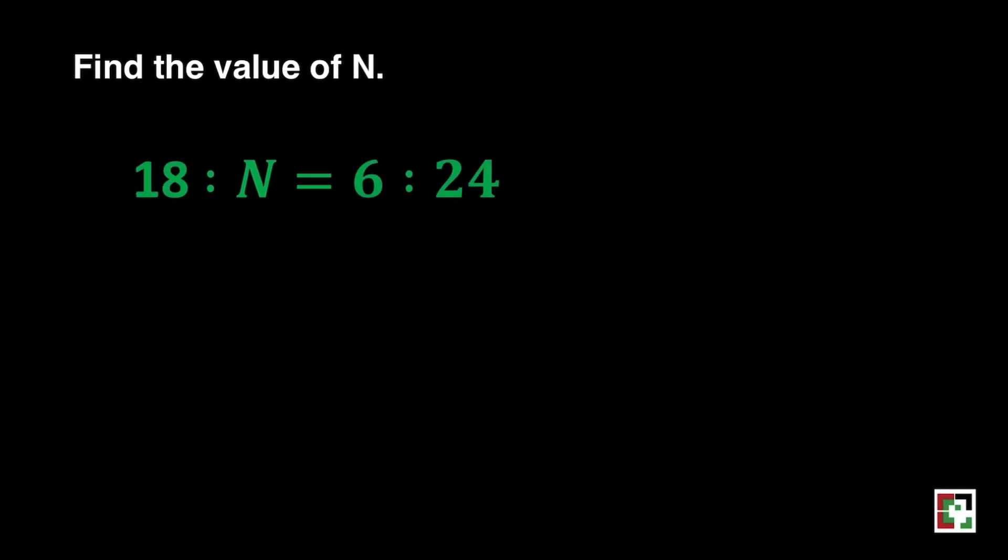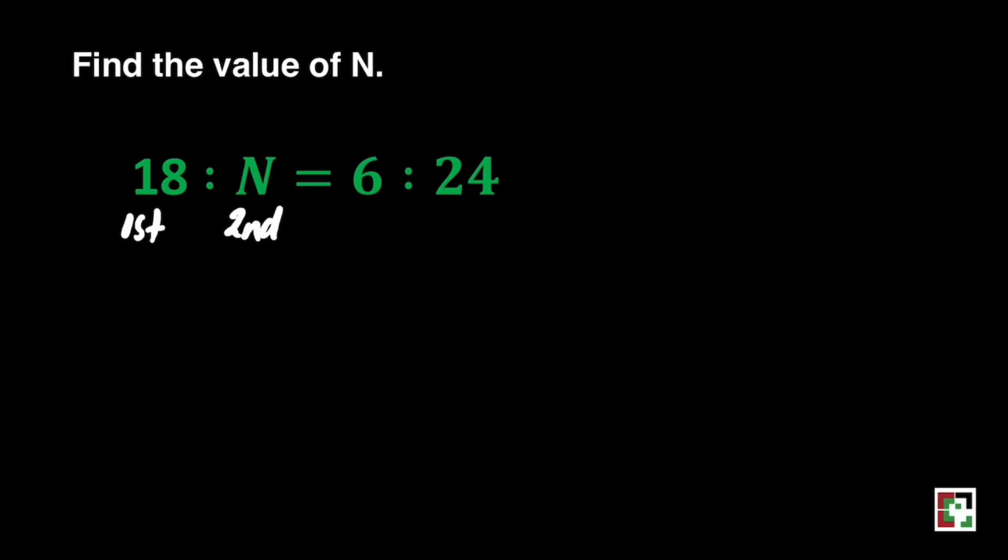The next question is 18 is to n is equal to 6 is to 24. We have the first term, second term, third term, and fourth terms. The product of the means is equal to the product of the extremes. So let's have this one.